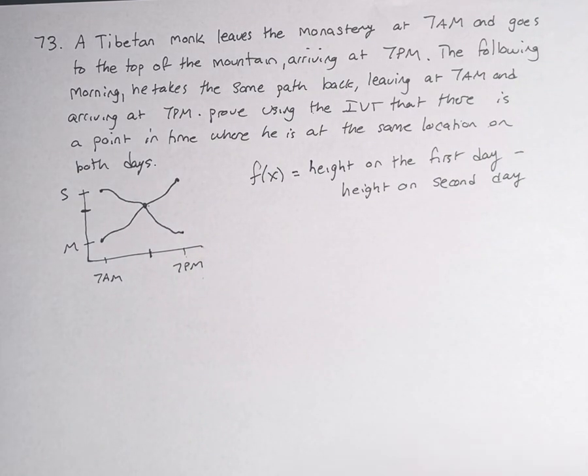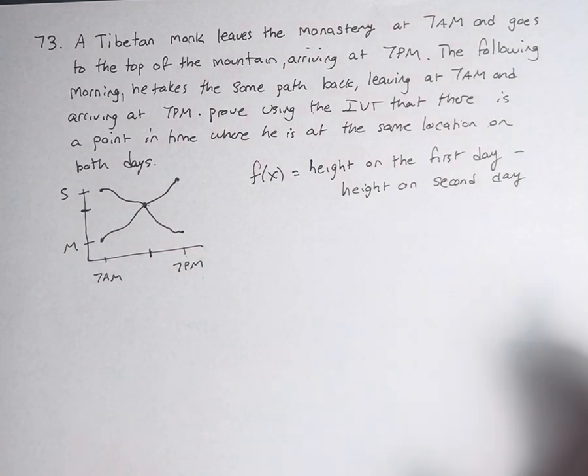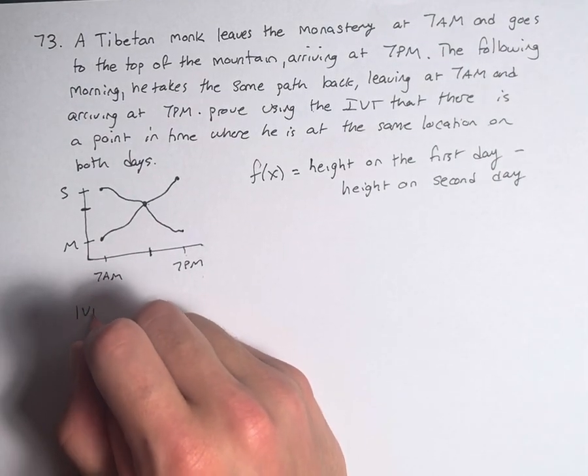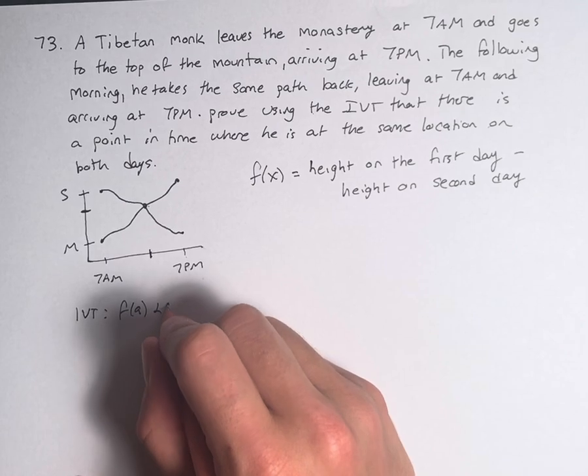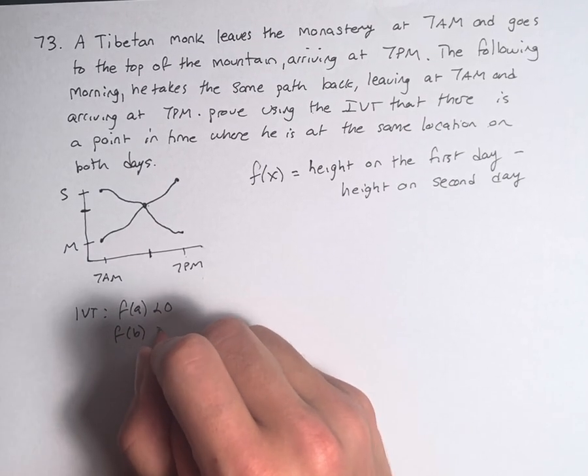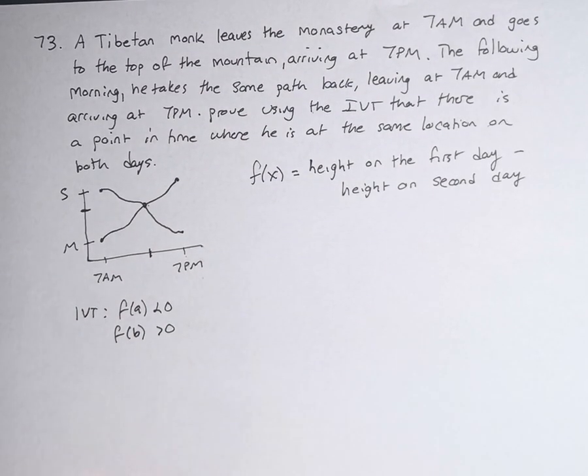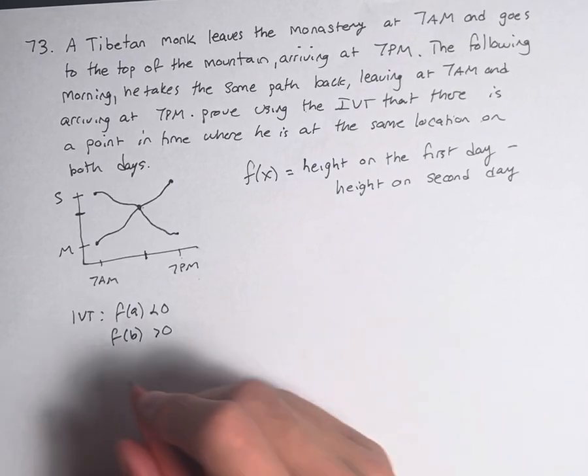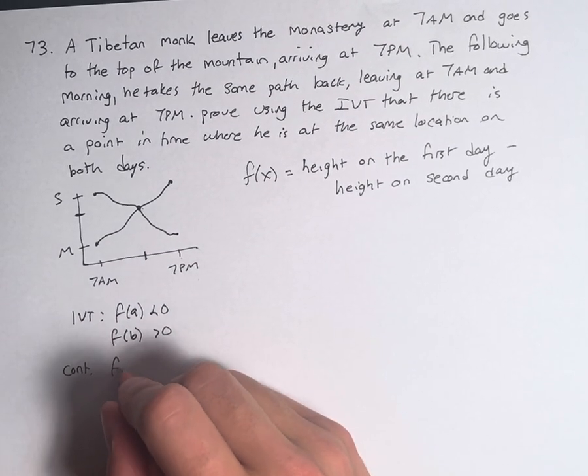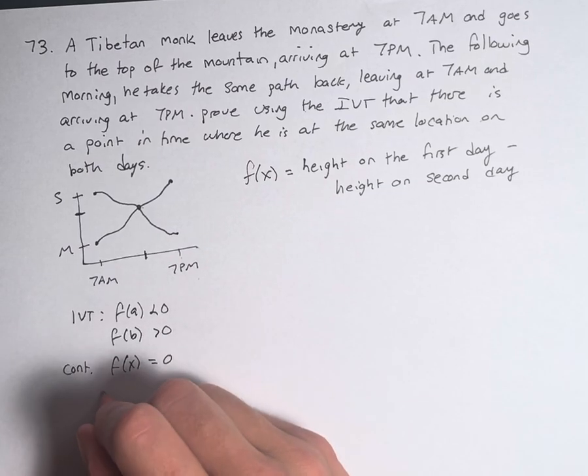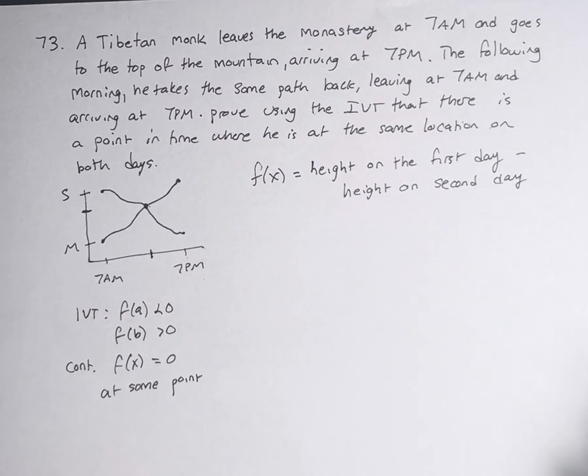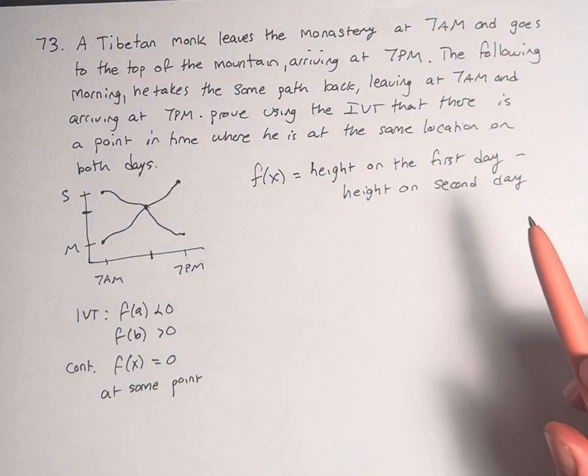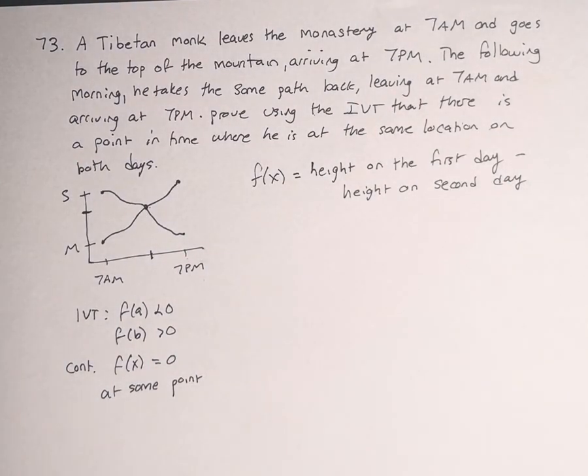And what are we trying to prove here? The Intermediate Value Theorem states that if f(a) is less than 0, and f(b) is greater than 0, then for a continuous function, f(x) equals 0 at some point in between a and b. If it's going from negative to positive, at some point it has to cross the x-axis and equal 0, if it is continuous.